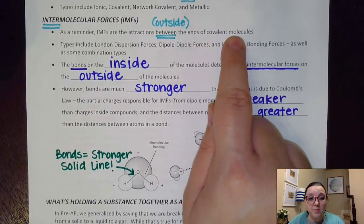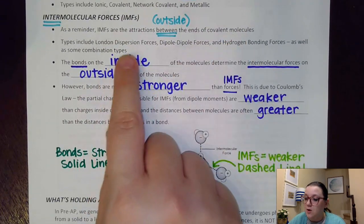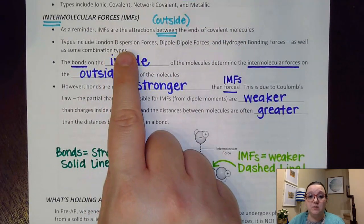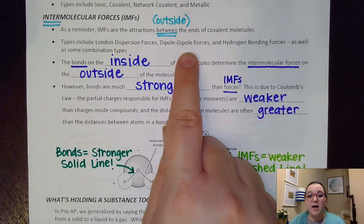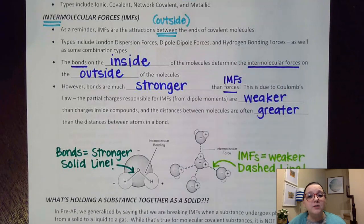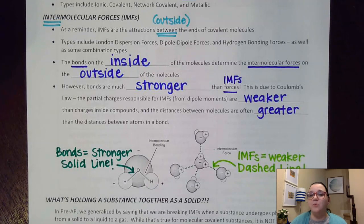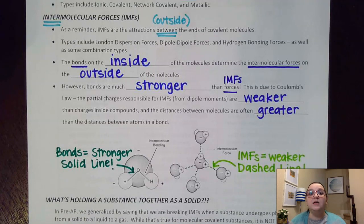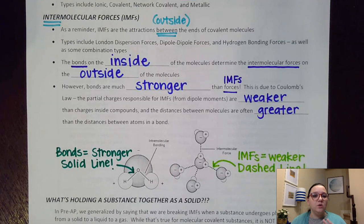Some of these types you're probably familiar with from pre-AP: London dispersion forces, dipole-dipole forces, and hydrogen bonding forces. There are also some combination types we'll get to when we talk about solutions and mixtures, like ion-dipole forces and dipole-induced dipole forces. We'll talk about those combination ones very soon.